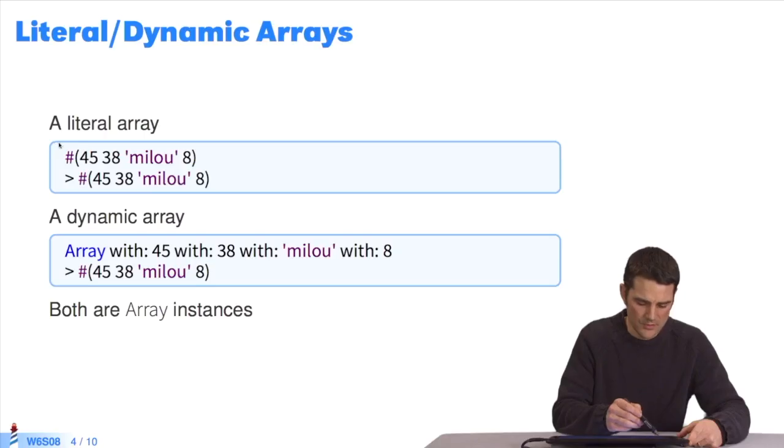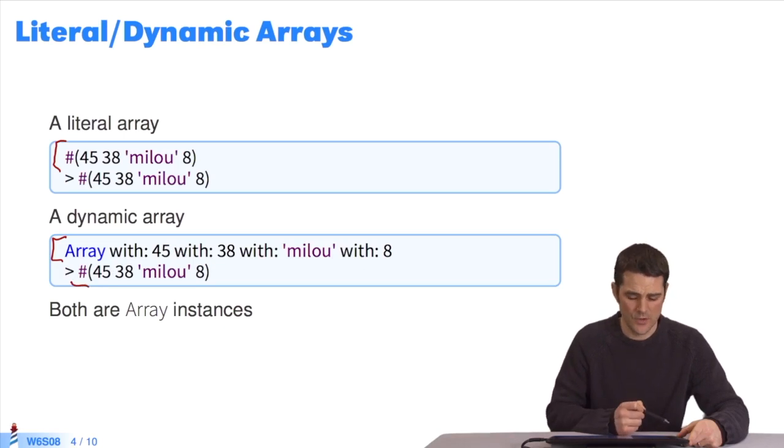The dynamic version of this literal array is right here. So to create a dynamic array, I take the array class. I create an instance using the method with, with, with, with. I send it with all these values. And it creates an array class instance equal to the one above. It's just two different ways of creating objects.